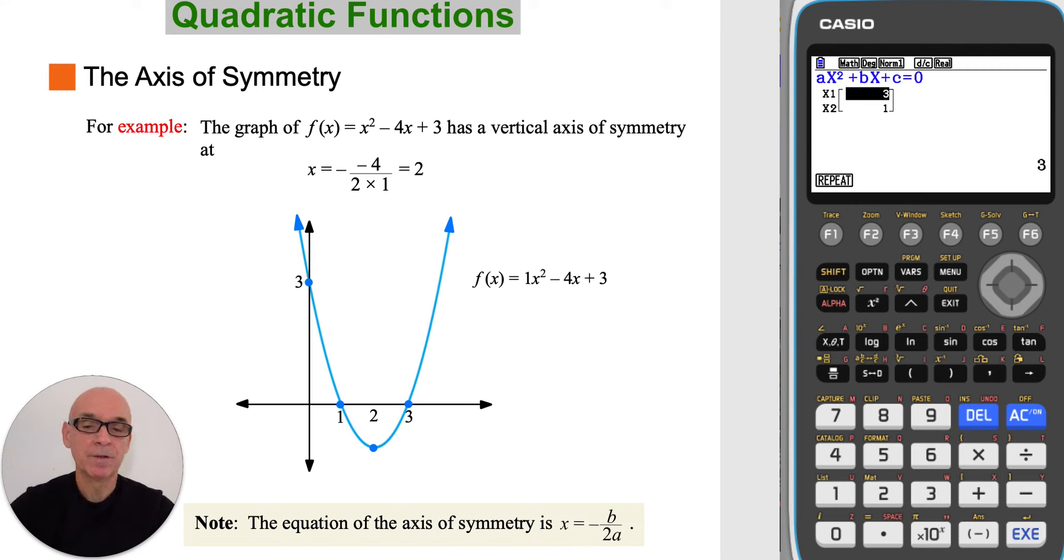Using the formula for the equation of the axis of symmetry, substituting in the value of b and a, we see that the function has a vertical axis of symmetry at x equals 2, as shown on the diagram.